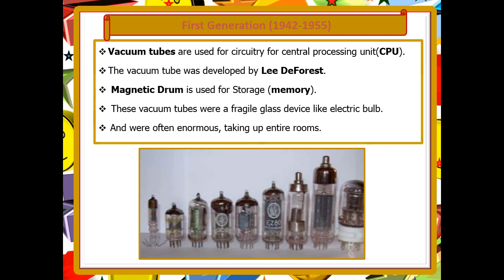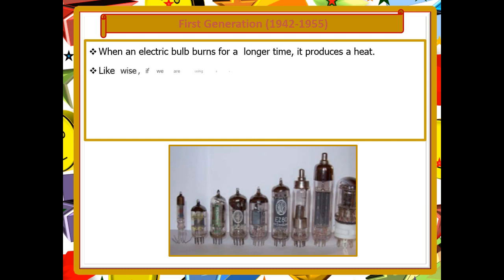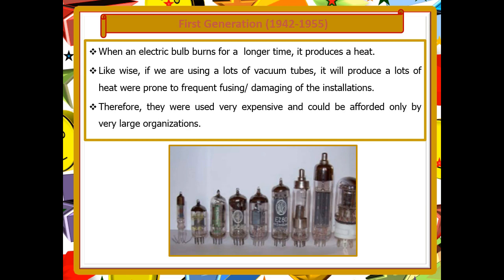The vacuum tube is made of glass, so we have to handle it very carefully. You know that when an electric bulb burns for a longer time it produces heat. Likewise, if we are using a lot of vacuum tubes it will also produce a lot of heat and is prone to frequent fusing or damaging of the installation.